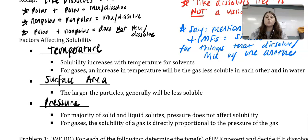Surface area: the larger the particles, generally will be less soluble. If I had a really big rock of this ionic solid, only the outside of that big rock is going to be reacting. Now if you took that big rock and you put it in a mortar and pestle and you grounded it to a powder, you now have increased surface area.